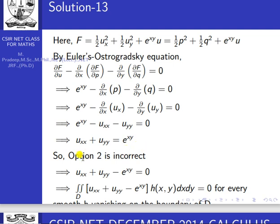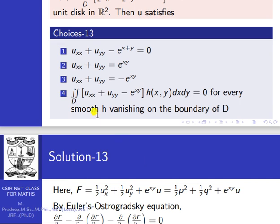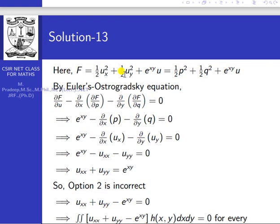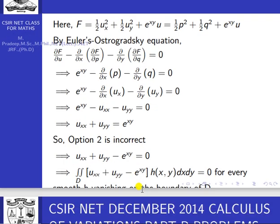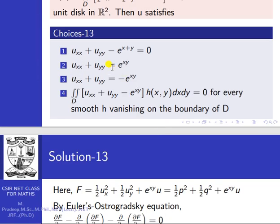So option two — uxx + uyy = e^(xy) — is correct. Option one is incorrect because it has e^(x+y) instead of e^(xy), and option three is also incorrect because it has minus e^(xy) on the right-hand side.